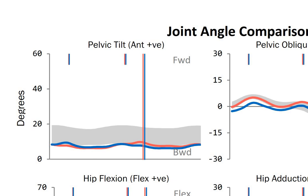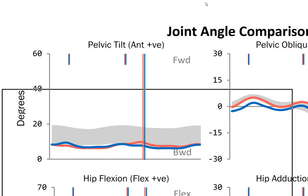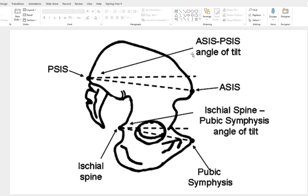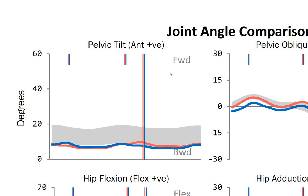To understand pelvic tilt in the sagittal plane, a marker is placed on the posterior superior iliac spine and the anterior superior iliac spine. The line between the two is measured against a horizontal line perpendicular to the ground. As we can see, the pelvis is tilted slightly forward, which is the typical natural position — and the graphs are labeled well, so take time to study what is being presented.